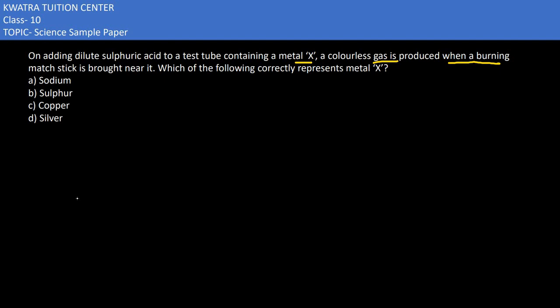So we need to get a colorless gas that is hydrogen gas. We have to check each metal option.